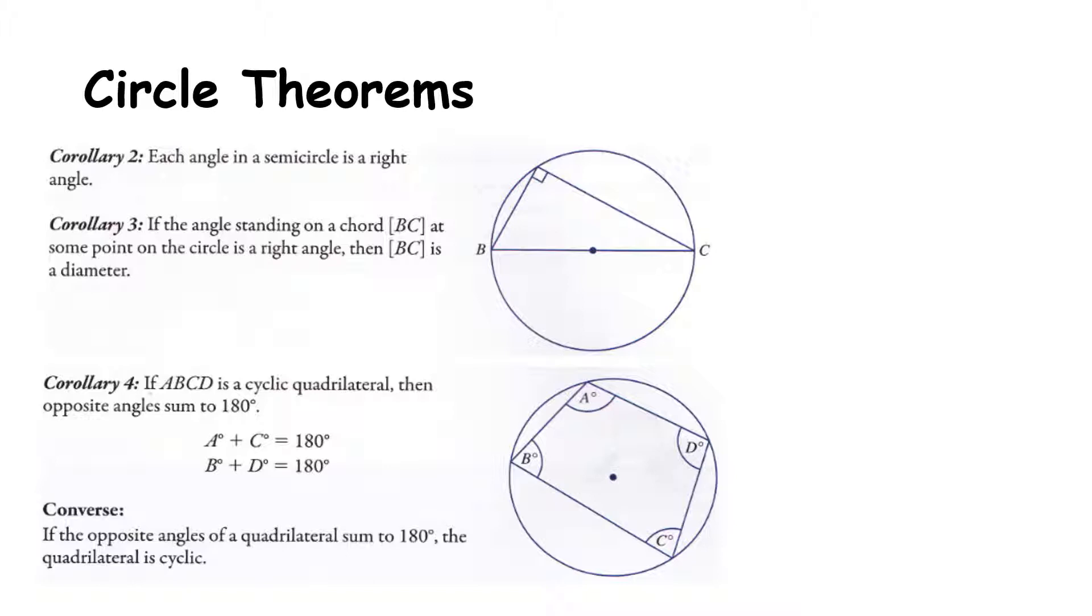Corollary 4: if ABCD is a cyclic quadrilateral, then the opposite angles sum to 180 degrees. Cyclic quadrilateral becomes very important at Leaving Cert Higher Level. A cyclic quadrilateral is a four-sided shape that sits within a circle. Specifically, all vertices must touch the circle. So notice here it's a four-sided shape and each of the four vertices is on the circle. Straight away we know that A and C, because they're opposite angles, must add up to 180 degrees, and B and D, because they're opposite angles in a cyclic quadrilateral, must add to 180 degrees. The converse of this is also true: if the opposite angles of a quadrilateral sum to 180 degrees, the quadrilateral must be cyclic.